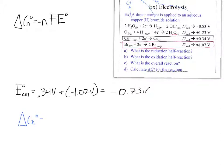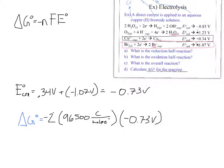Plugging into delta G = −nFE: the number of moles of electrons transferred is two, Faraday's constant is 96,500 coulombs per mole of electrons, and the voltage is 0.73 V (joules per coulomb). Coulombs cancel coulombs, moles of electrons cancel, and we convert to kilojoules to get a final value of positive 140 kJ/mol. A positive delta G confirms this is a non-spontaneous reaction.